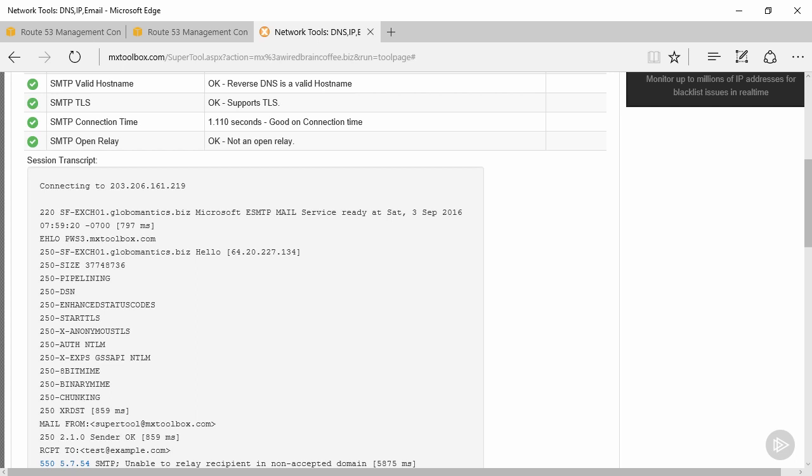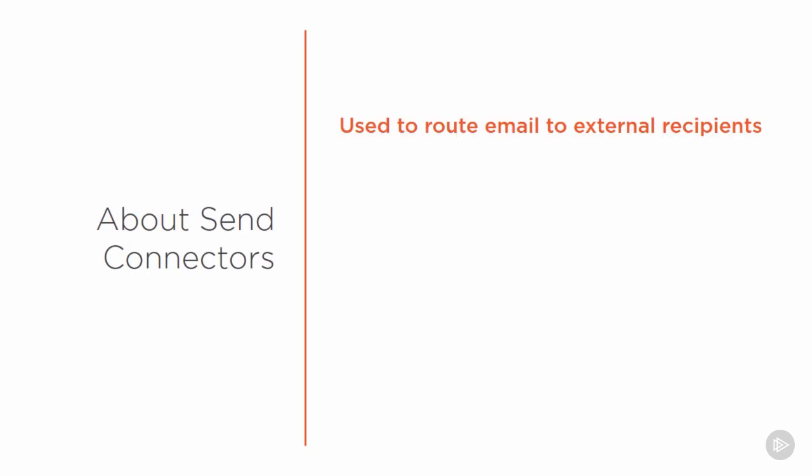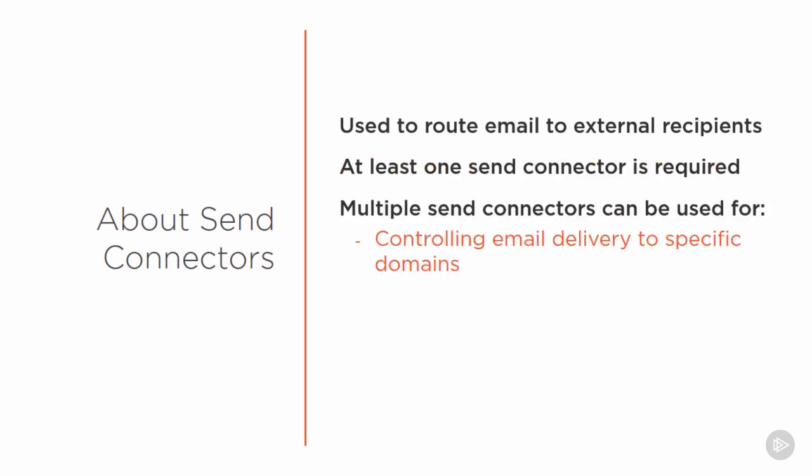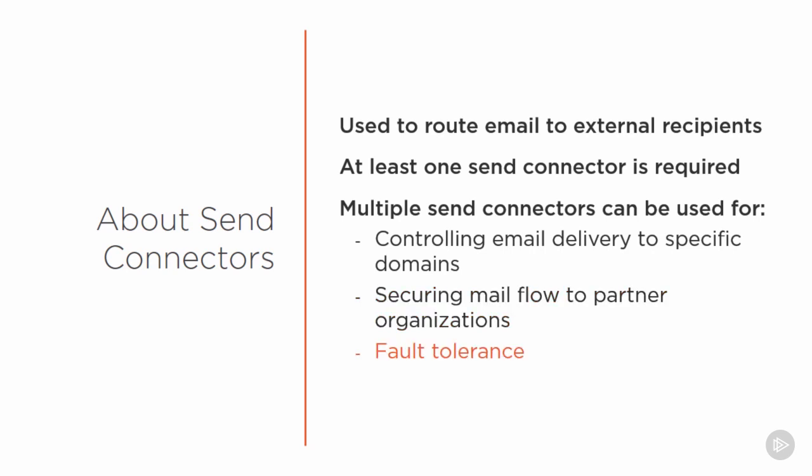Let's look at send connectors. Send connectors are used to route email to external recipients. Every organization that wants to send email to the internet needs at least one send connector configured. Multiple send connectors can be used for controlling email delivery to specific external domains, securing mail flow to partner organizations, and for fault tolerance — in other words, you can have multiple outbound routes. Send connectors are shared for all domains and recipients in the organization, so Globomantics and WideBrainCoffee do not need separate send connectors.